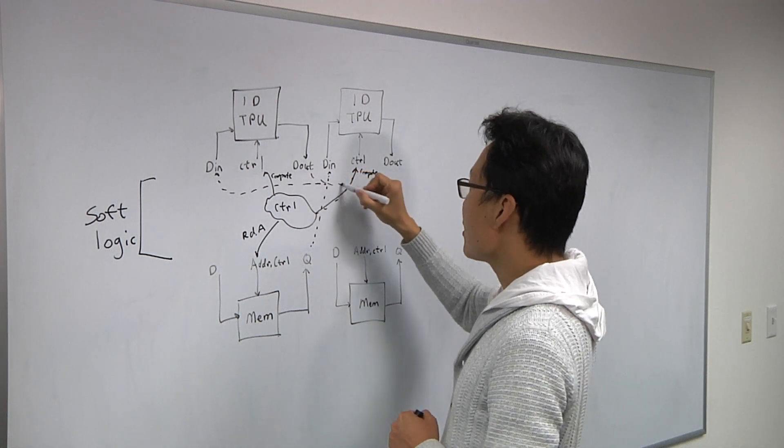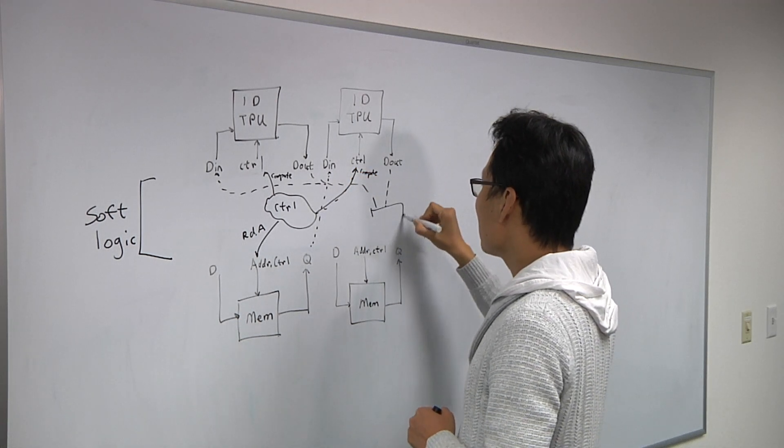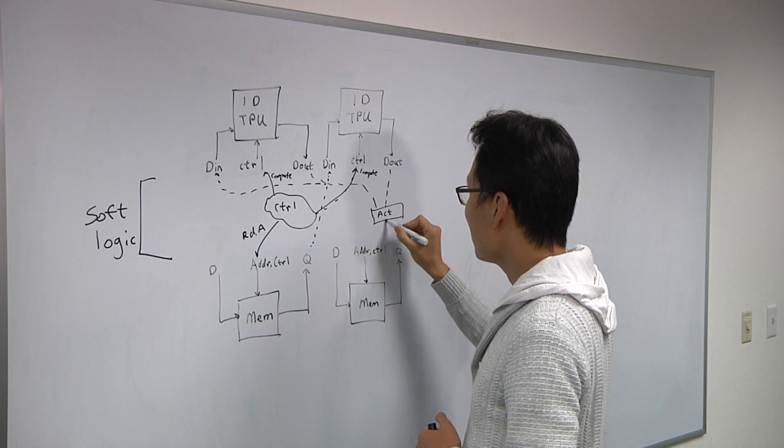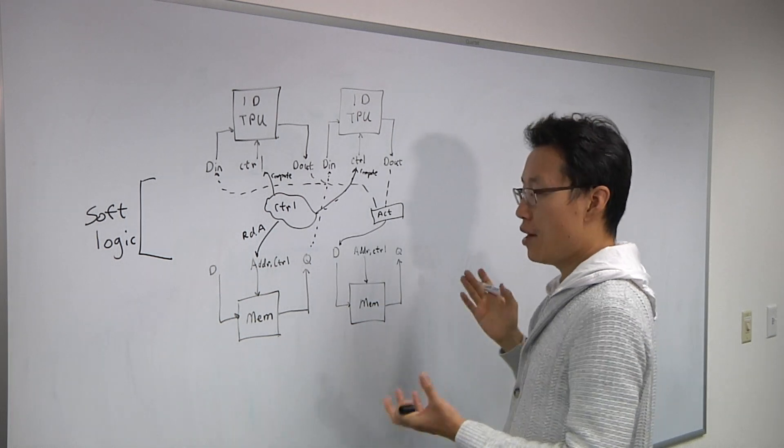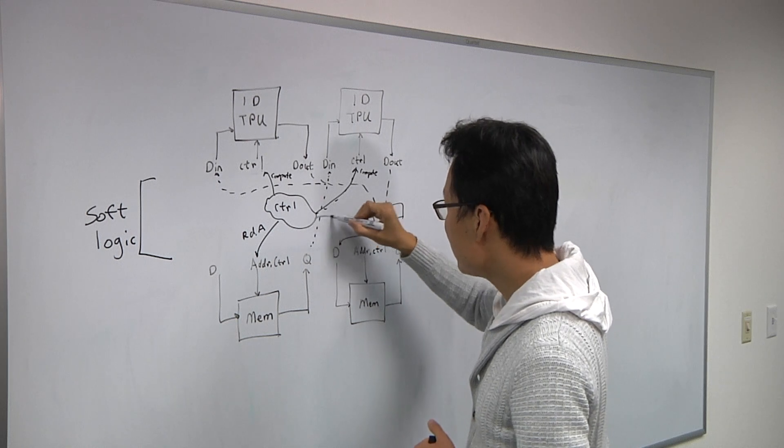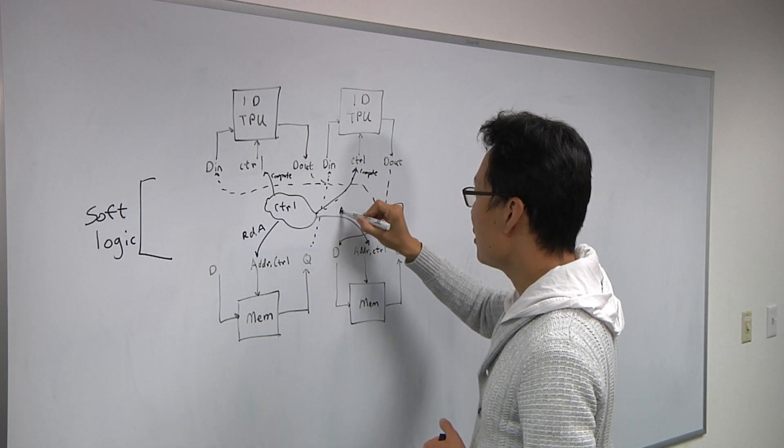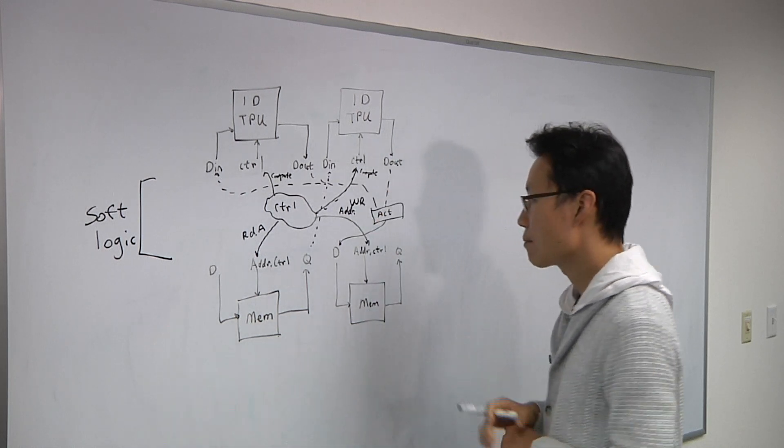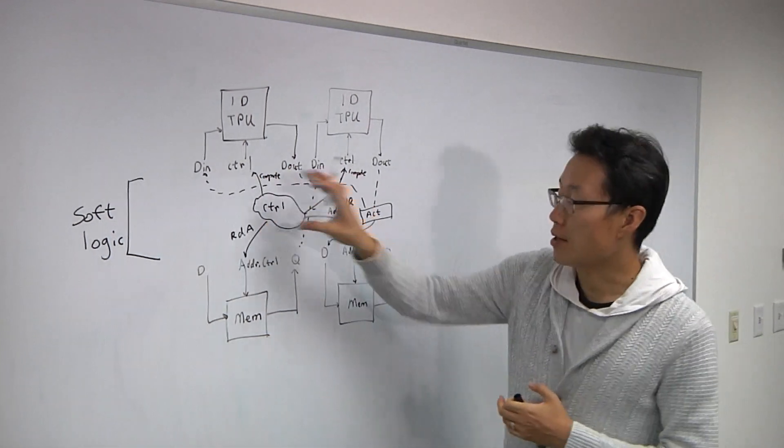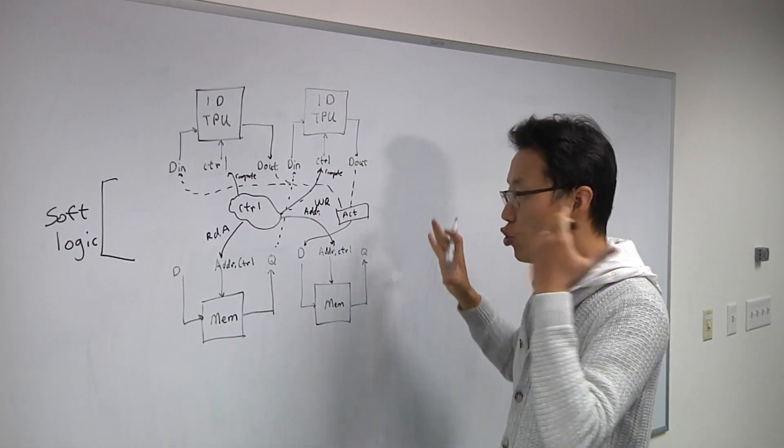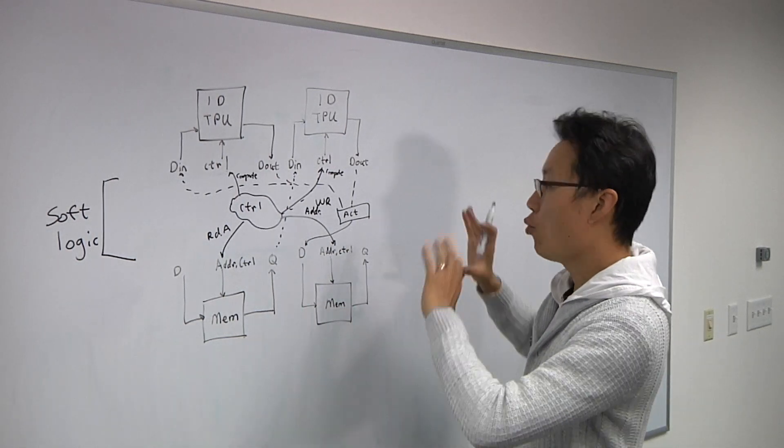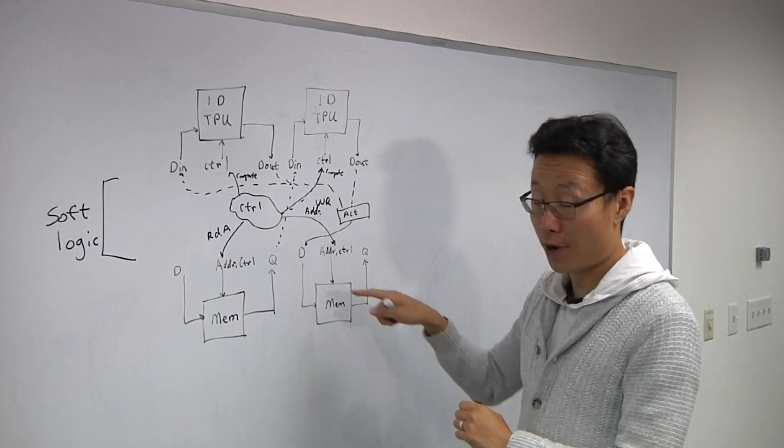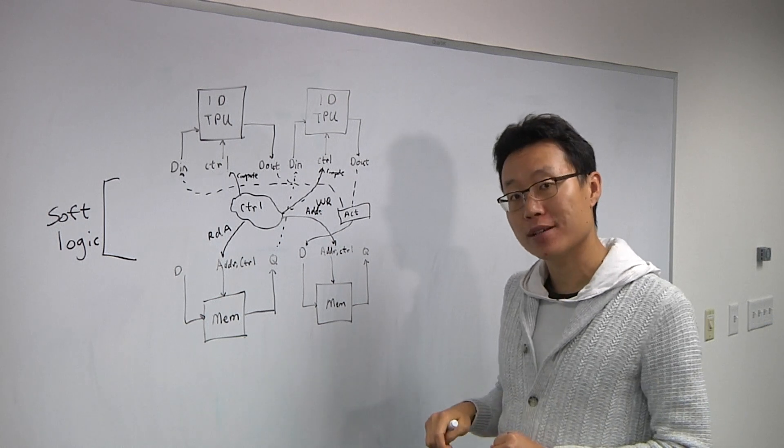And when the outputs are ready, the soft logic will then also implement what we call some activation functions. The output of that activation function gets routed to another memory to be written, and this memory will be controlled as the address of the write. So you can view this as a bit of a glue logic that's used for controlling when to read data, when to compute data, how to steer data, how to activate the data, and finally, how to write the data back out to memory.